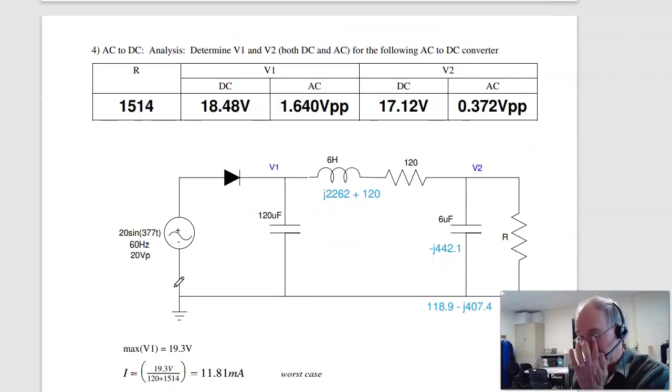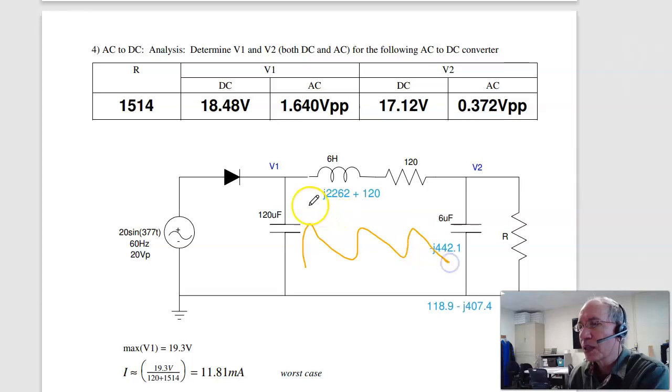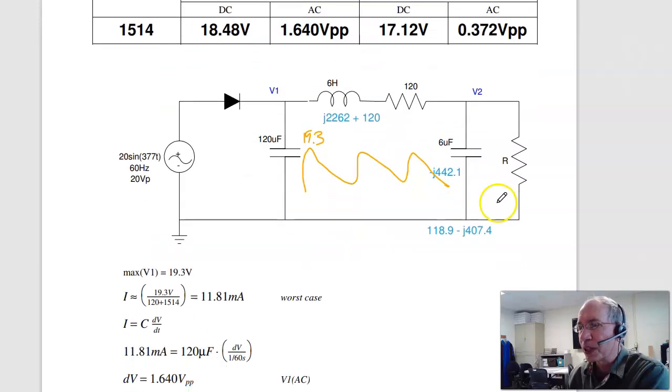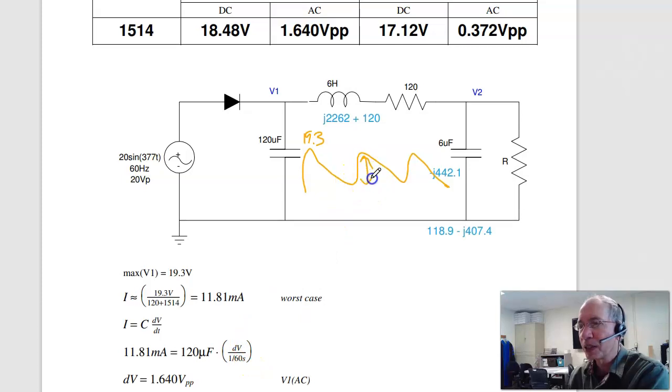Problem four, AC to DC converter. V1 looks like this. It's got a peak and then discharges. The peak is 19.3 volts. That's your 20 minus 0.7 volts drop across the diode. Worst case, the current is 19.3 over 120 plus R, 11.8 milliamps. For this capacitor, I equals C dV/dt. I know C, I know the current, I know the time, 1/60 second. Solve for dV. And the voltage drop is 1.6 volts.